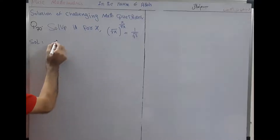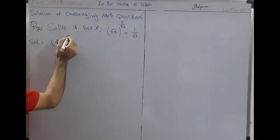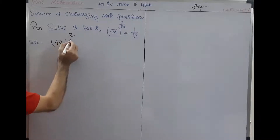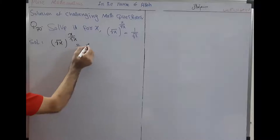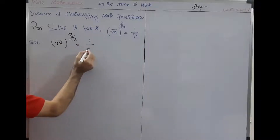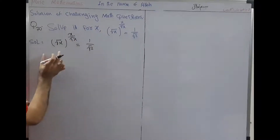The equation is: square root of x, whole to the power (x over square root of x), is equal to 1 over square root of 2.